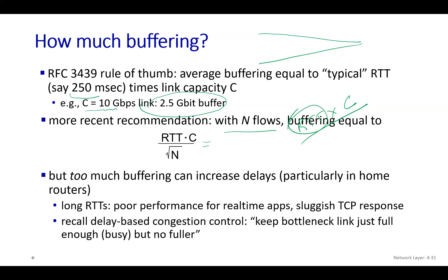It's also important to remember the congestion control mechanism, which ensures link capacity is used to the maximum and slows down transmission rate when congestion is detected. This also helps manage packet loss — it's not only buffer space but also congestion control that takes care of these issues.